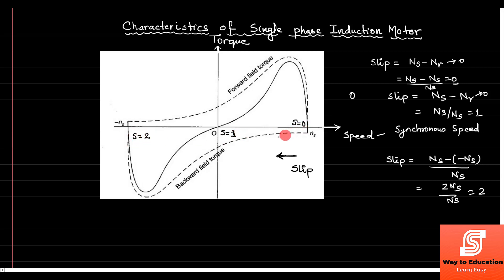So this same graph can be used for both torque-speed and slip representations. If we use torque and speed axes, then speed is minus Ns in the backward direction, 0 at standstill, and Ns as synchronous speed. If we talk in terms of slip, you can use the slip values 0, 1, and 2 correspondingly.